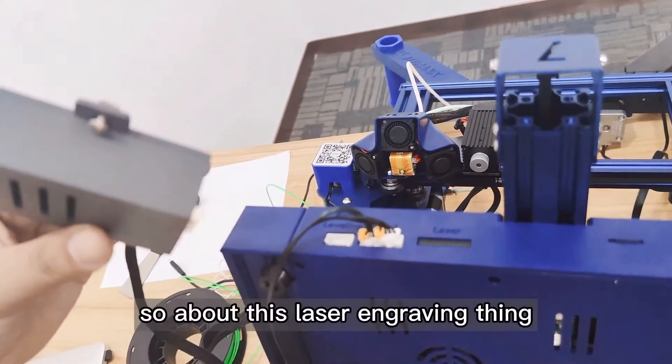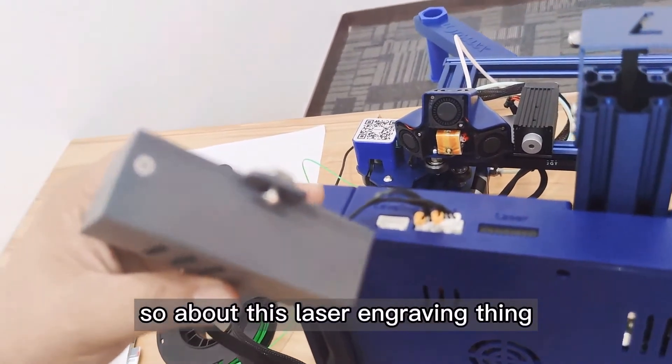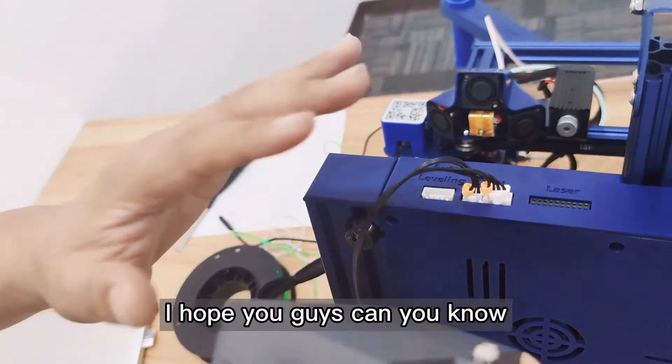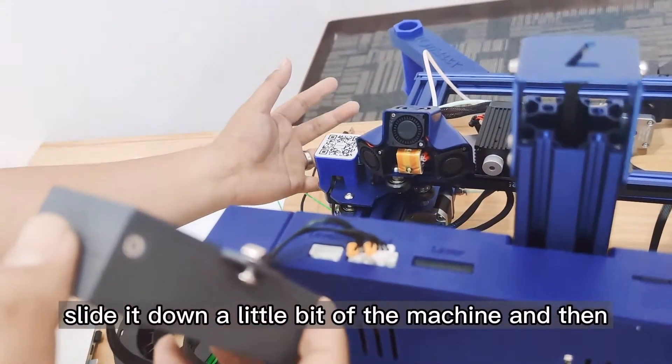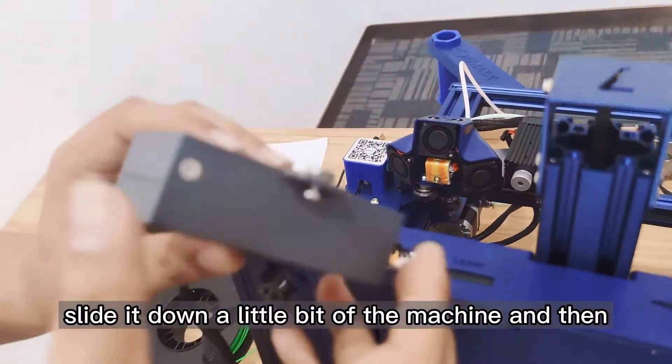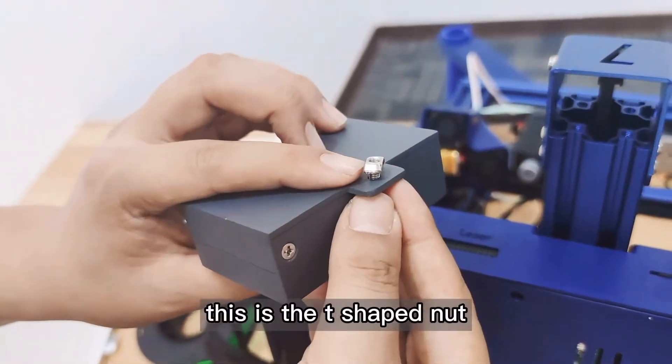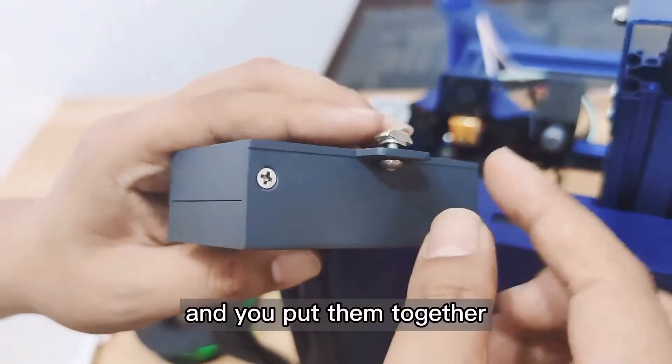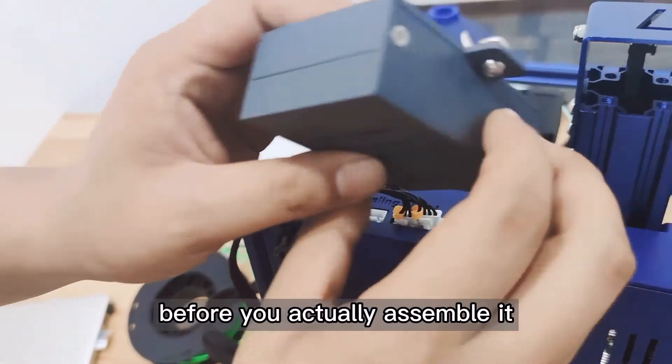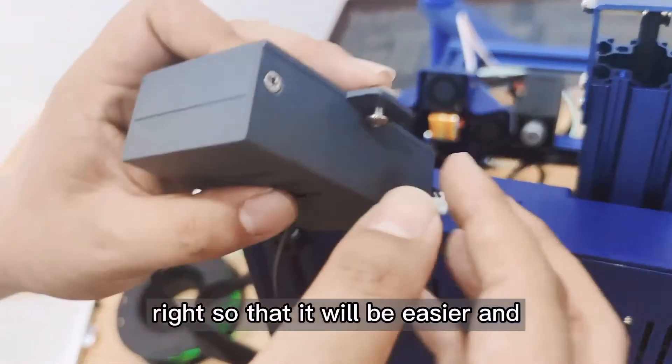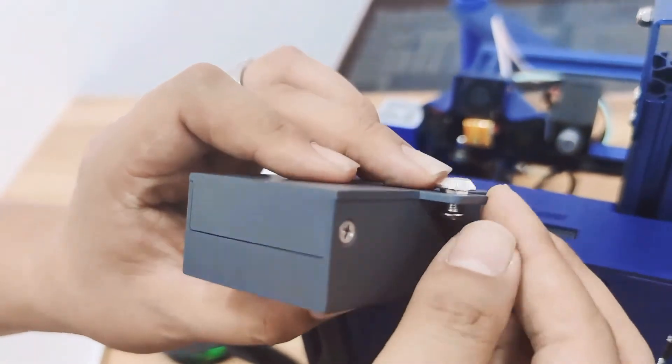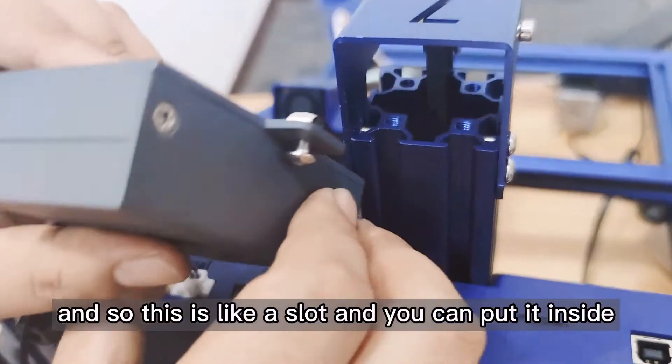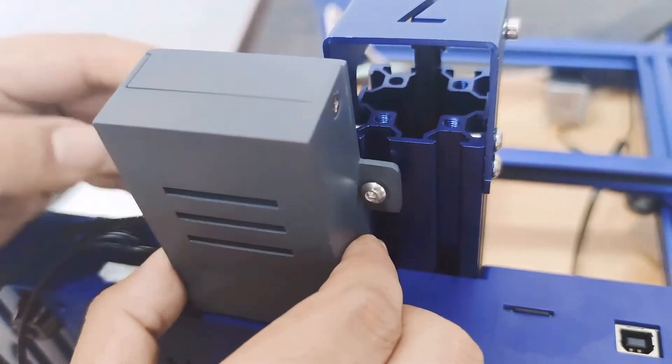About this laser engraving case, I'm going to assemble it. First thing, I hope you can slide it down a little bit on the machine. This is the T-shaped nut and this is a long screw. You put them together before you assemble it so it will be easier. This is the T-shaped nut, make it vertical. This is like a slot and you can put it inside.